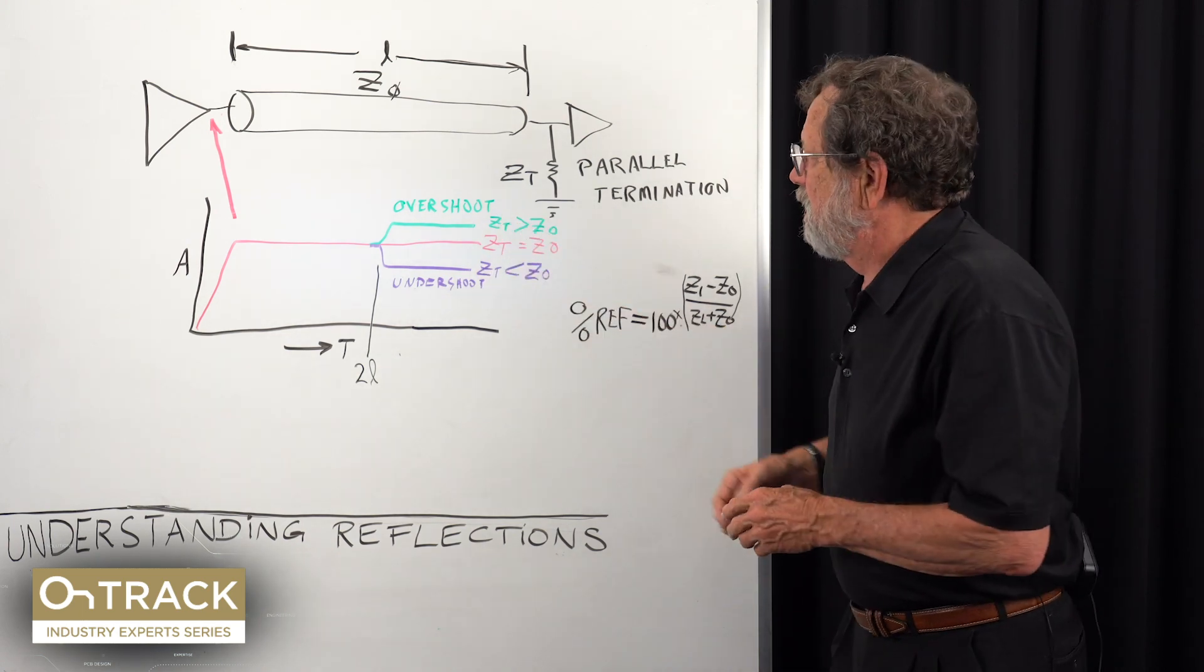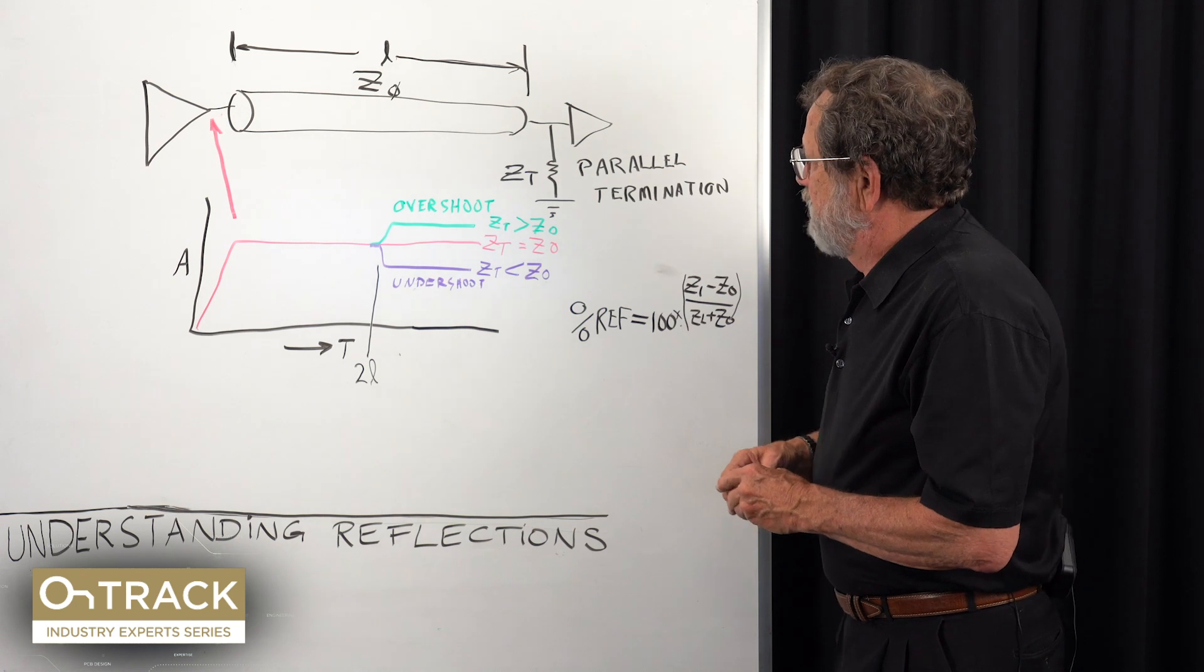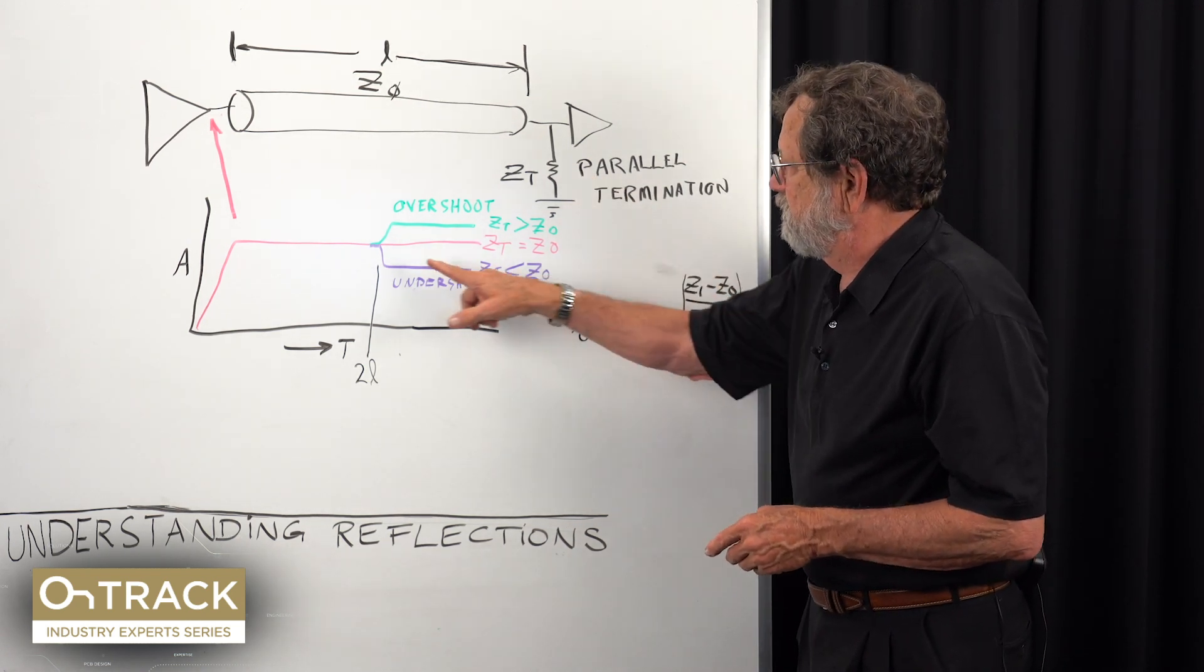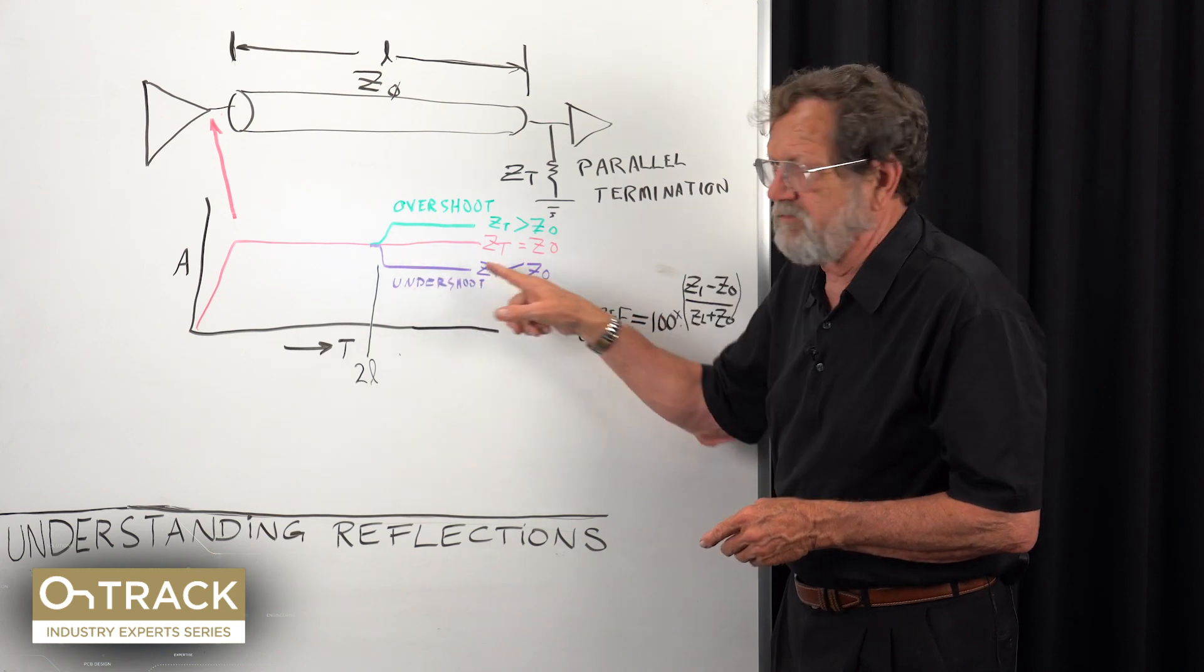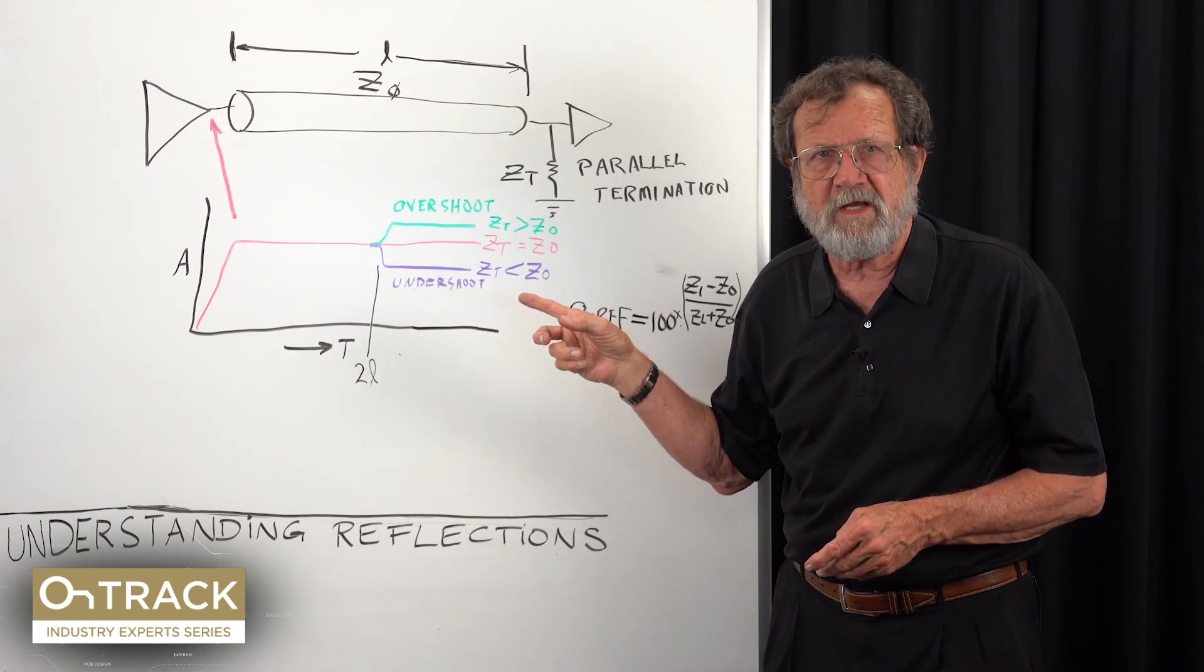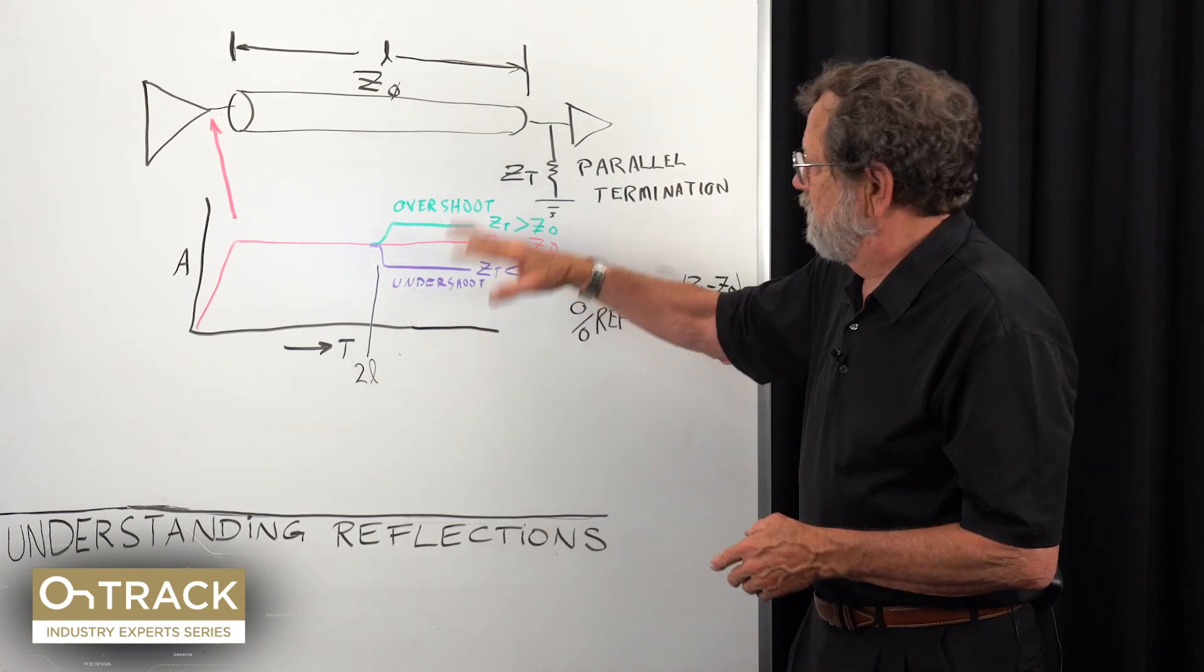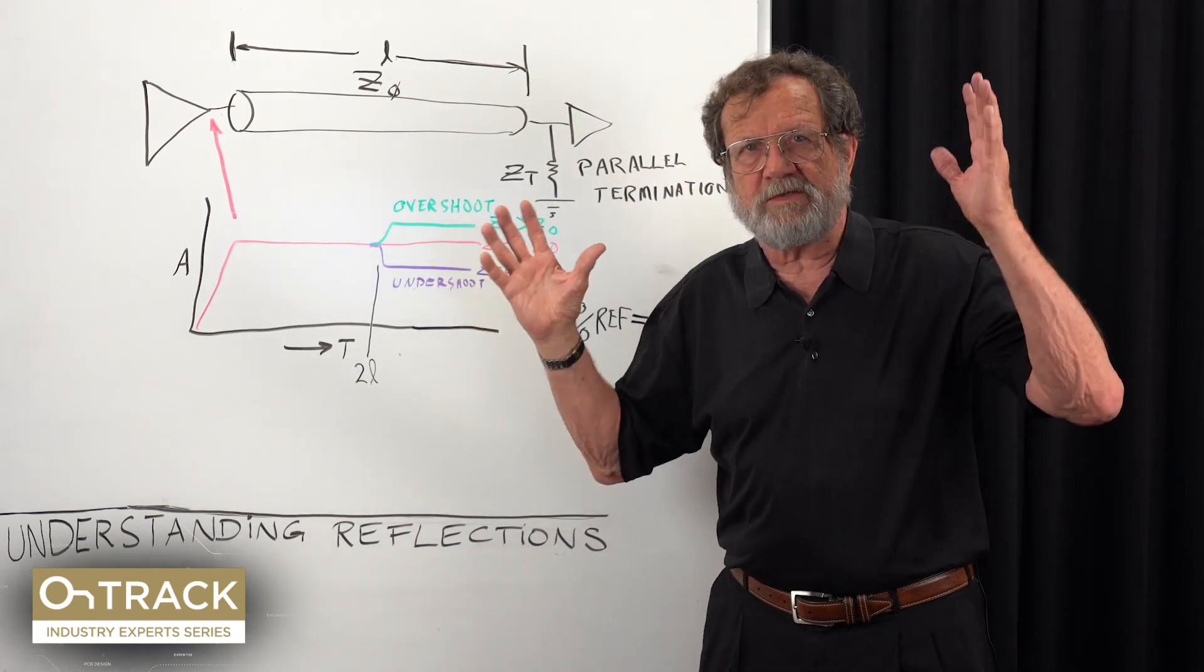The other condition is if the terminator value is less than the line impedance. We again get a reflection, but you notice it's the other direction—it's a takeaway. We call that undershoot. When we had five volt logic, no one ever cared about that because we had so much noise margin.